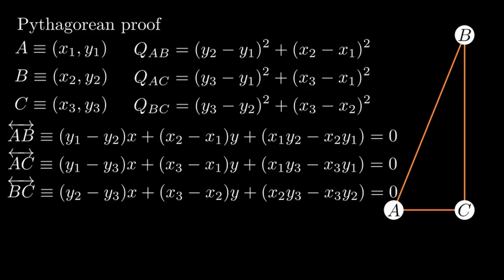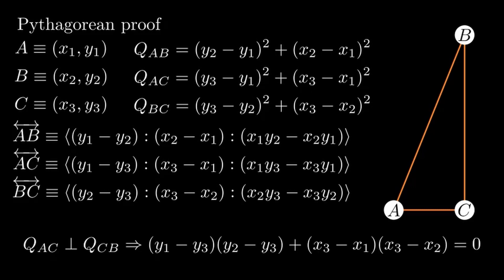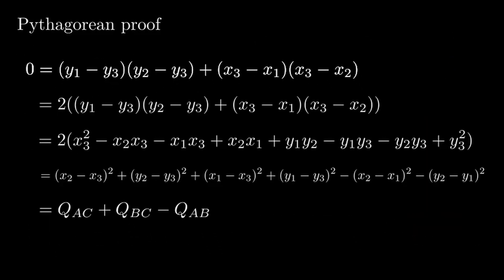These lines can be written as ratios of their constants in standard form. In the case of Pythagorean's theorem, two of these lines are perpendicular, so we know that their slopes are reciprocal opposites by definition. Mathematically, that looks like this. Rearranging with algebra brings us to our desired conclusion.